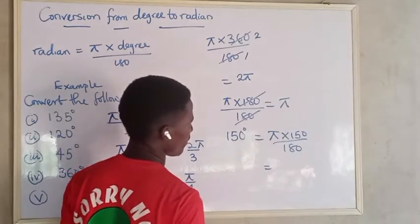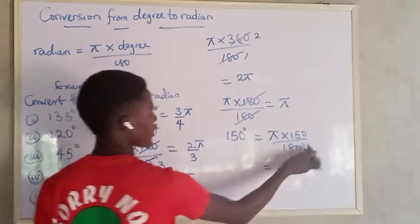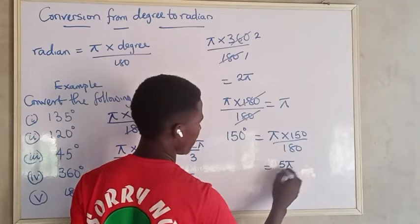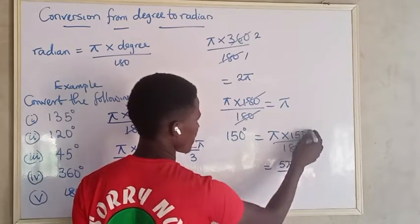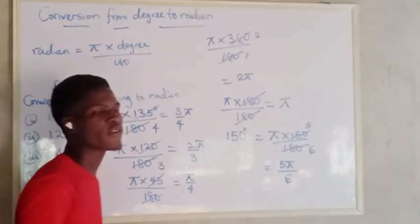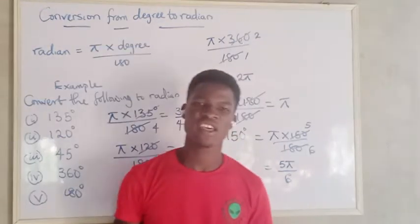30 here 5, 30 here 6, so that's 5 pi over 6 because 30 divides here 5, 30 divides here 6.